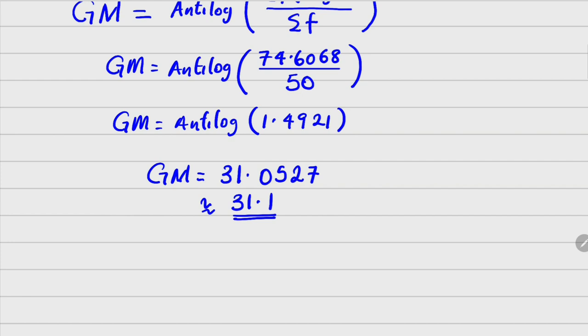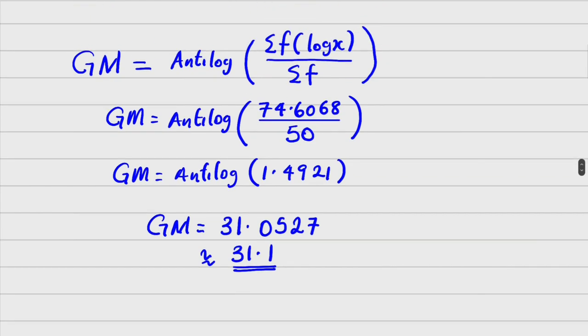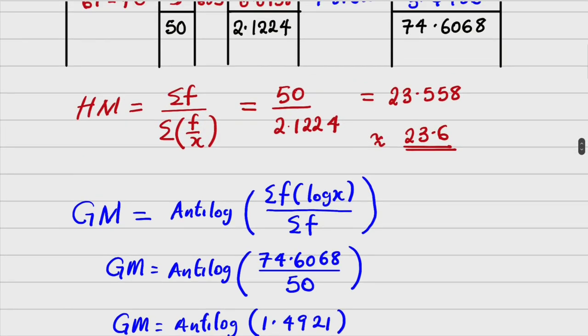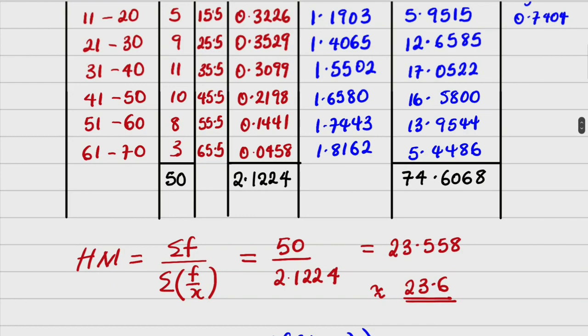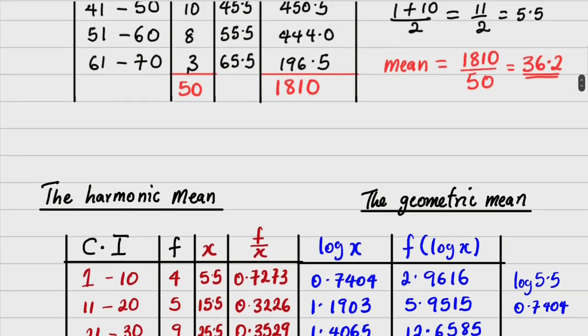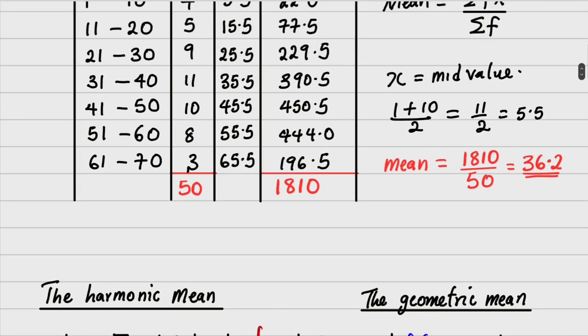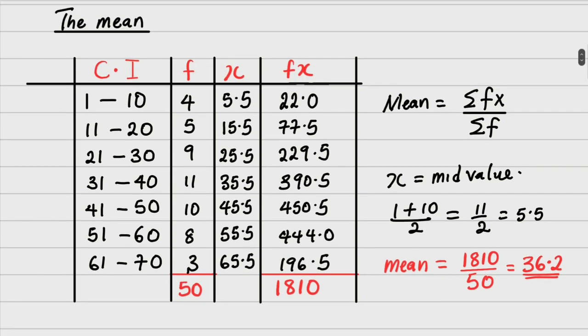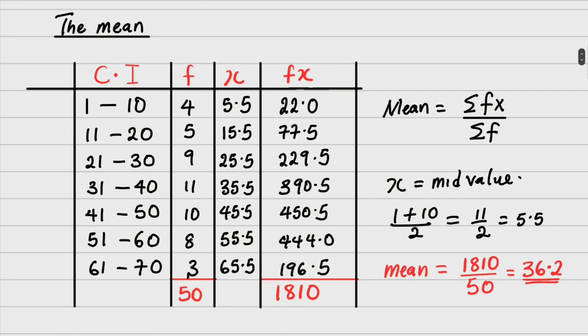We've succeeded in calculating the mean, the geometric mean now on the screen. Then we found the harmonic mean, which is 23.6. Then finally we have our mean, which is 36.2. Thank you for watching. I want to believe you enjoyed this video. Don't forget to subscribe. Don't forget to pass your comment. Thank you and bye-bye.